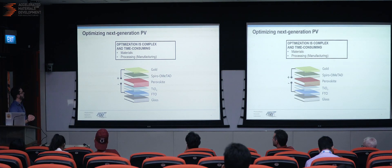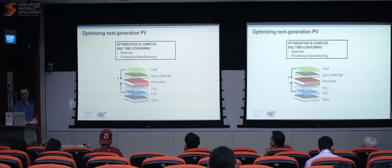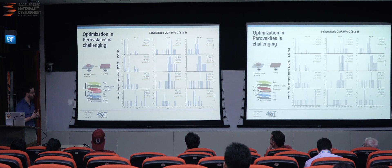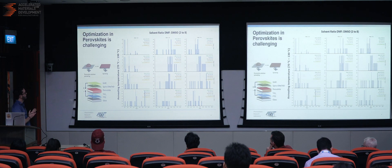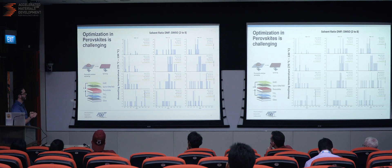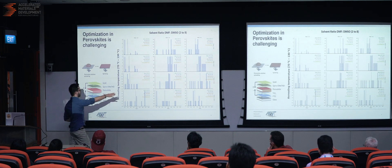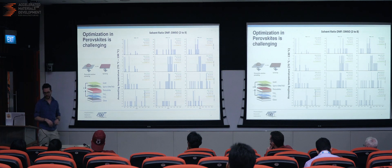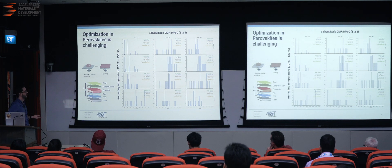For perovskites, it tends to be very time-consuming to optimize devices because you have a stack of materials — you have to pick the materials, pick the processing conditions, and you need some objective that actually makes sense for what you want to do. These are an example of two different processing conditions — two different annealing temperatures and solvent ratios for solution processing of perovskites. What you can see is that if you plot the efficiency, the distributions vary a lot. Some points in the parameter space are close to zero, with a lot of cells at zero efficiency. Others look more normal. So the question becomes: do you optimize for the maximum efficiency, for the mean efficiency? What do you care about?